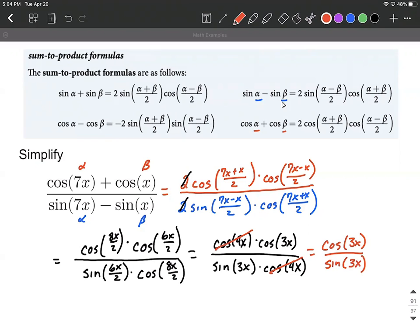This will further reduce using our quotient identities. Tangent is sine over cosine, so cotangent is cosine over sine. This gives us cotangent of 3x.